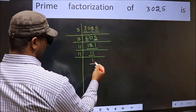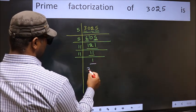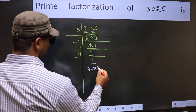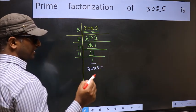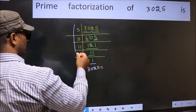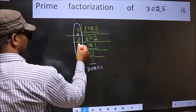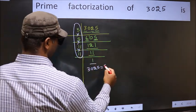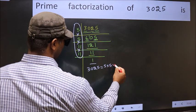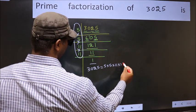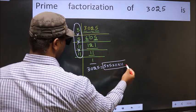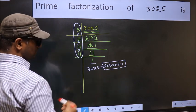So we got 1 here. The prime factorization of 3025 is the product of these numbers. That is, 5 into 5 into 11 into 11. This is the prime factorization of 3025. Bye.